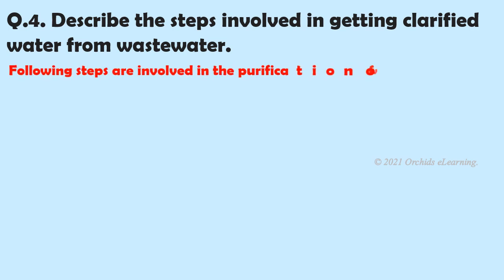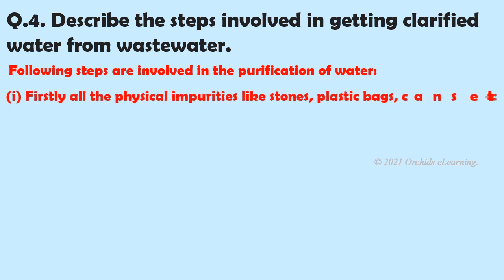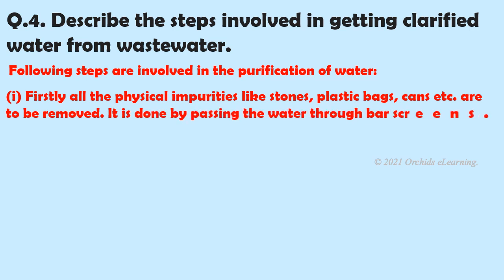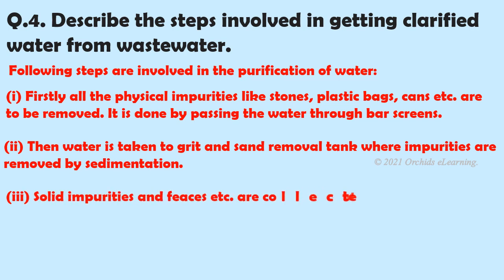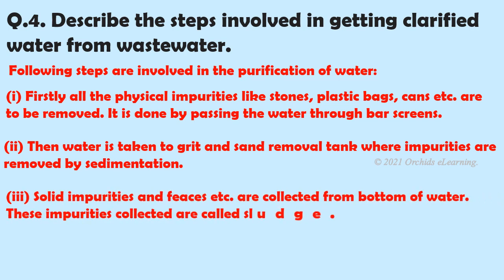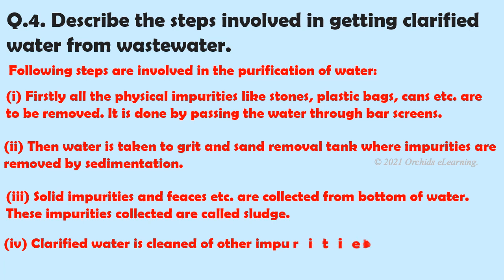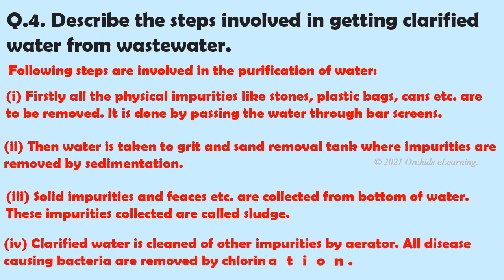Describe the steps involved in getting clarified water from wastewater. The following steps are involved in the purification of water: firstly, all physical impurities like stones, plastic bags, cans, etc. are removed by passing water through bar screens. Then water is taken to the grit and sand removal tank where impurities are removed by sedimentation. Solid impurities and feces are collected from the bottom and are called sludge. Clarified water is then cleaned by the aerator, and all disease-causing bacteria are removed by chlorination.